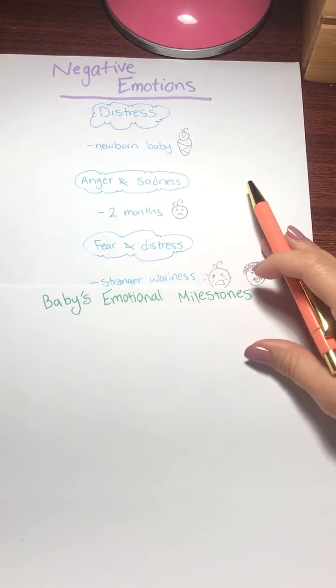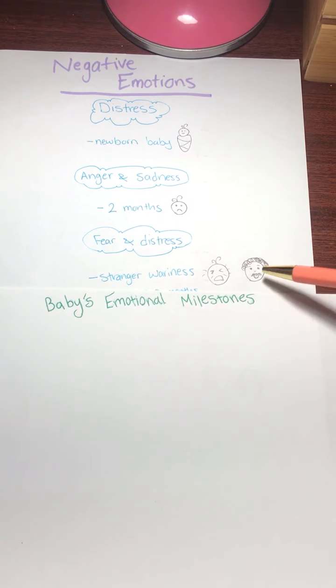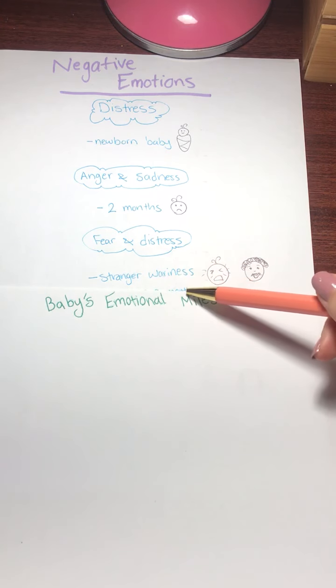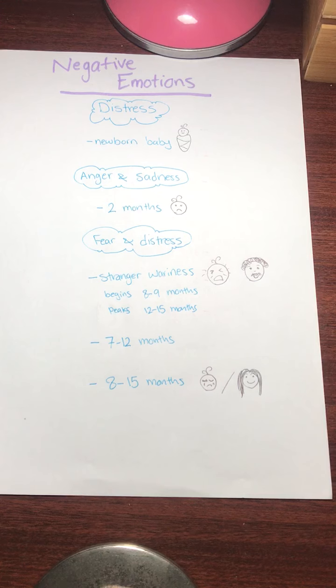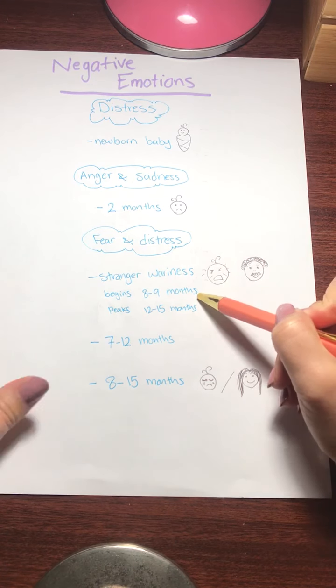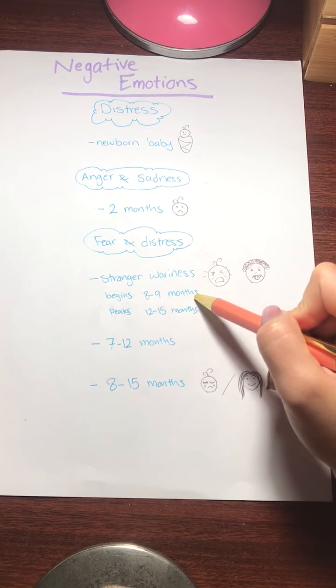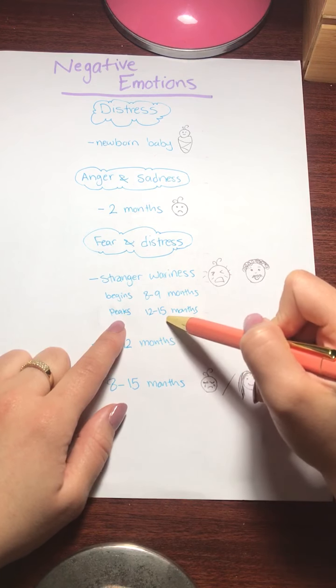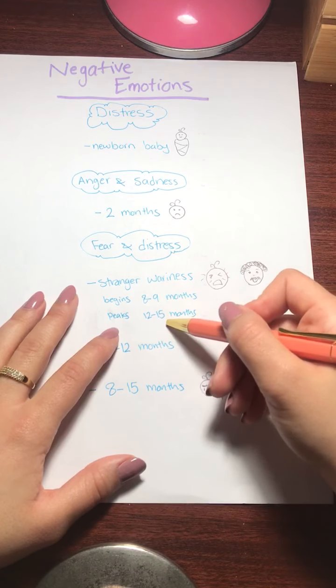This one's a little bit, it starts to get a little more complex here because we start to dive into stranger weariness. And here's our stranger, here's our baby. At about eight to nine months, you'll start to notice that your baby is starting to get concerned with strangers. They don't want to go near them. They prefer their caregiver rather than strangers. And this peaks at about a year to 15 months. They really don't want to go near those strangers. They prefer caregivers or familiar faces.